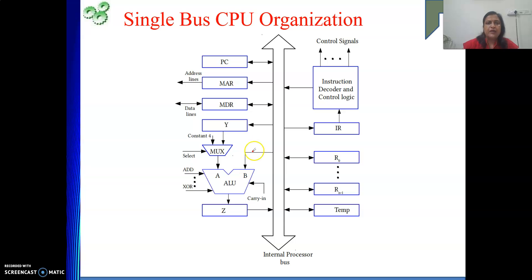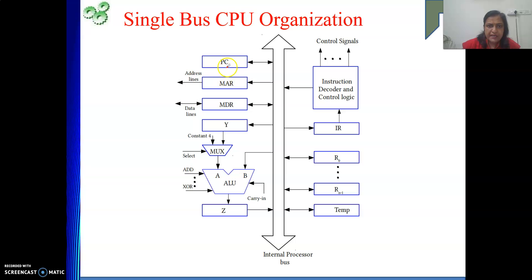Using this single set of bus, we are connecting the components. With PC, the connection is bi-directional. To fetch one instruction from memory, we give the content of PC to MAR, but there is no direct connection between them. So the content of PC will be placed onto the bus, and from the bus that content will go to MAR. That is one direction — PC content going towards the bus. Though I have drawn a single line, it actually represents a set of wires, because PC content can be 16-bit, 32-bit, or 64-bit depending on your memory size.